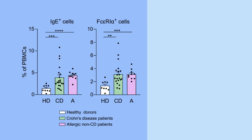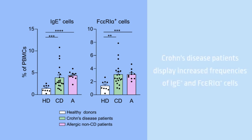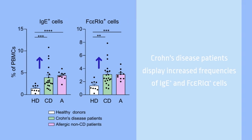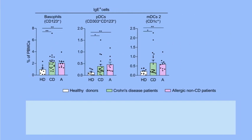There, we observed that the expression levels of IgE and its high-affinity receptor, FcεRI, were significantly higher in Crohn's disease patients and allergic patients than in healthy donors, without significant differences between Crohn's disease and allergic patients.